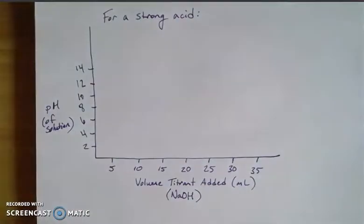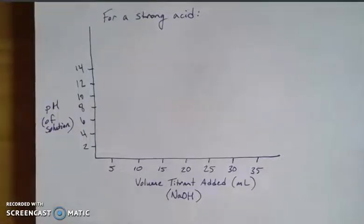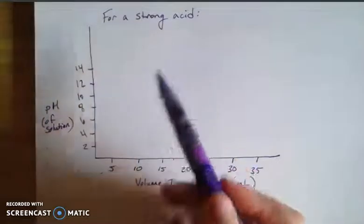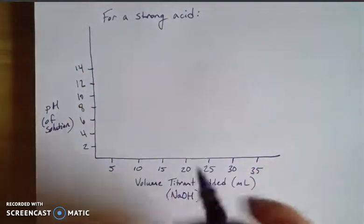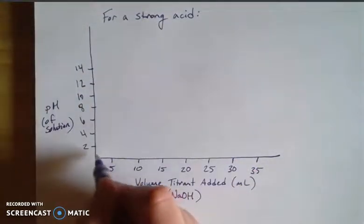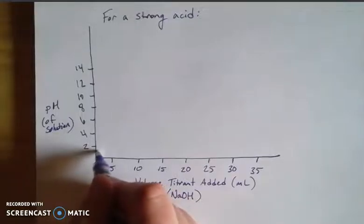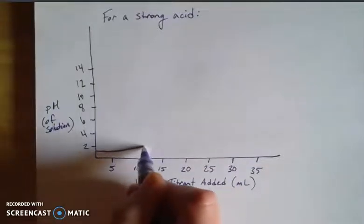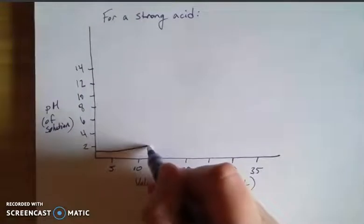This could be something like hydrochloric acid or hydrobromic acid — something that's strong — and let's consider that it's a monoprotic acid just for ease of concept. For strong acids we know they have a pretty low pH, so it would start off pretty low on the scale and it's going to stay pretty low because it's mostly acid here. As I'm adding the base to it, my pH is going to start to go up.